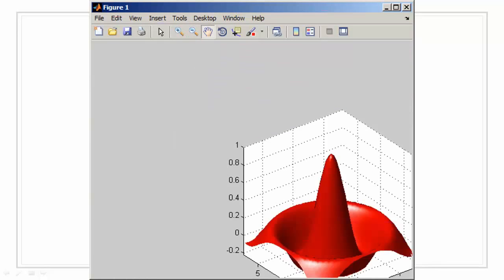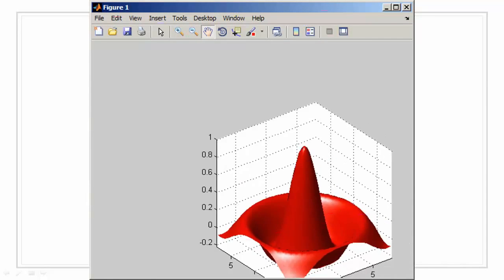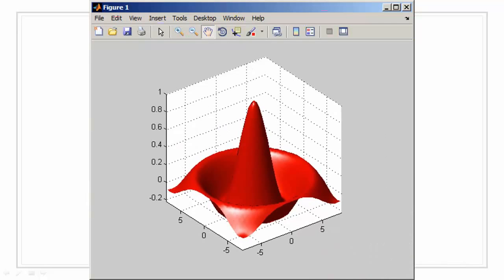We have a pan tool, where we can drag the plot. And when we double click using the pan tool, the view is reset to the normal.